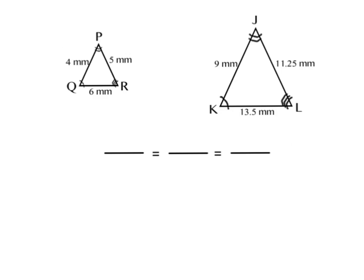The first thing we're going to do is write a proportion statement about our triangles. Remember, this is where we match up the corresponding sides. I'm going to start with the large triangle and say that side KJ corresponds with side QP.